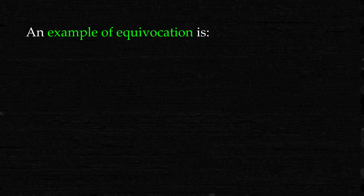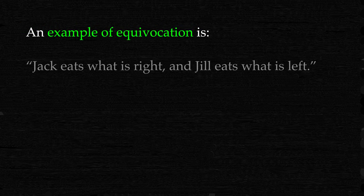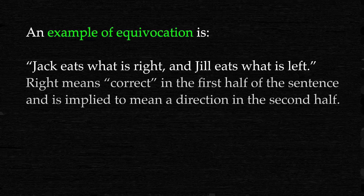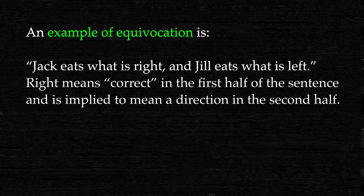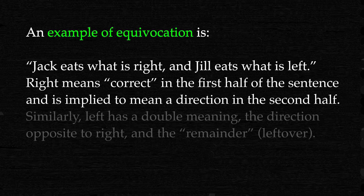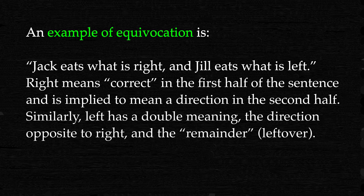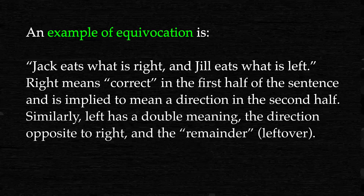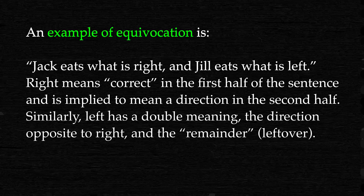An example of equivocation is: Jack eats what is right and Jill eats what is left. 'Right' means correct in the first half of the sentence and is implied to mean a direction in the second half. Similarly, 'left' has a double meaning — the direction opposite to right, and the remainder left over.